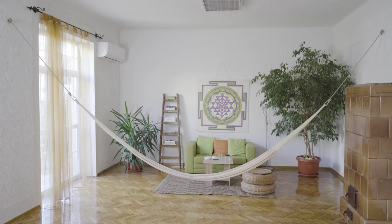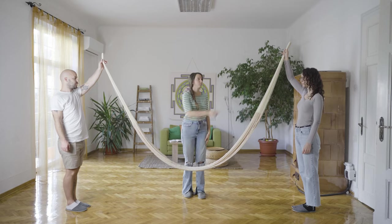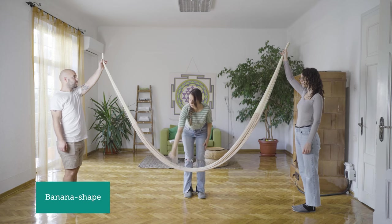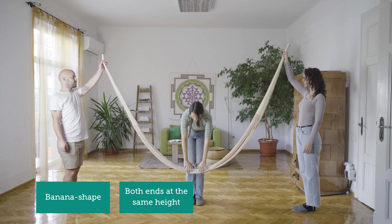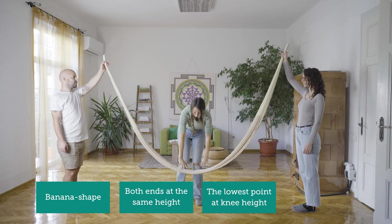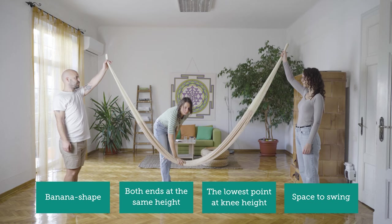Let's start by finding the right hole for our wall mounting. Here again, we need the help of our two friends to hold the hammock according to the four rules. The hammock sags nicely, both ends are at the same height, the lowest point is at knee height, and there's enough room to swing.